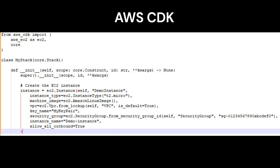It allows you to define your infrastructure using familiar programming languages, and then deploy that infrastructure to AWS using the AWS SDK. To spin up an EC2 instance with the name Demo Instance using the AWS CDK, you would use the following code. This code creates a new stack and defines an EC2 instance with the specified parameters. The instance is given the name Demo Instance and is associated with the specified security group. Note that you will need to replace the values in this code with the appropriate values for your environment.